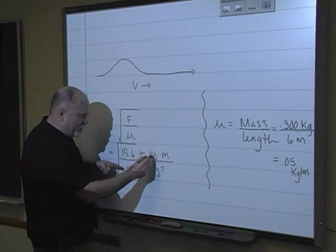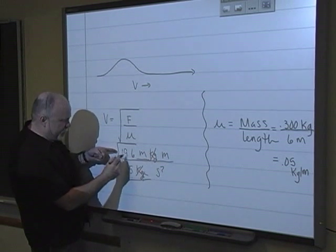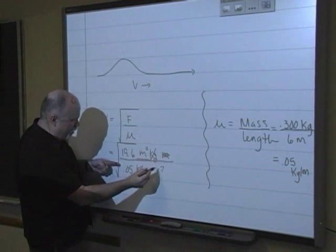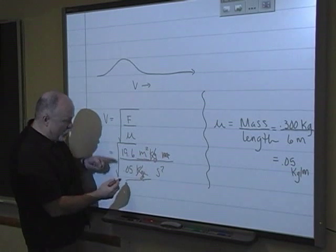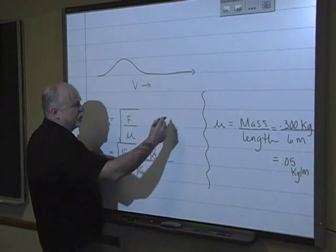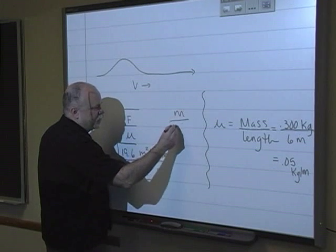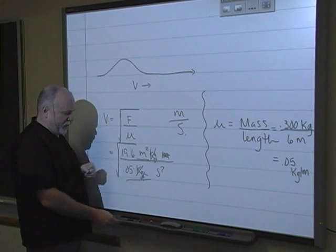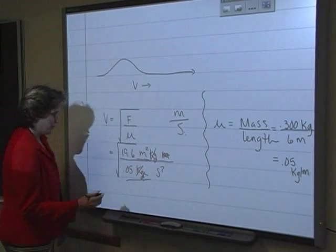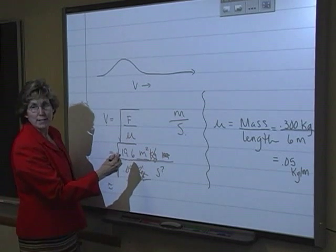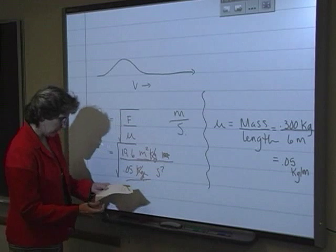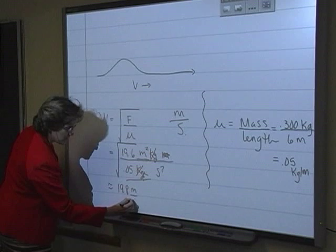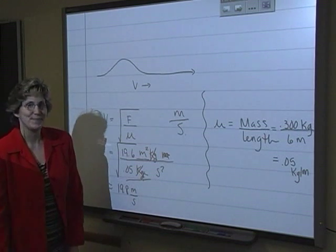So my kilograms will cancel, and I'll be left with 19.6 meters squared divided by 0.05 seconds squared. When I take the square root of it, my units are going to be meters per second, which is the velocity we were looking for. Get out your calculators and do the math yourself. I took the square root of 19.6 divided by 0.05, and I found out that the velocity is 19.8 meters per second.